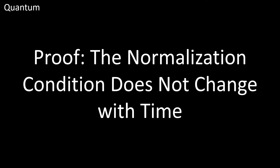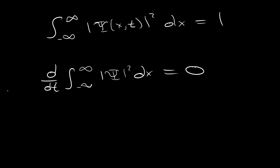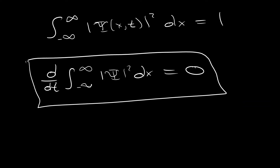Hello folks. Today we're going to be doing a quick proof that the normalization condition of our wave function in quantum mechanics does not change with time. What we're trying to show is that when we take the time derivative of the normalization, we end up getting zero.